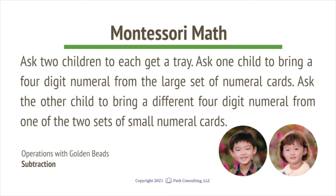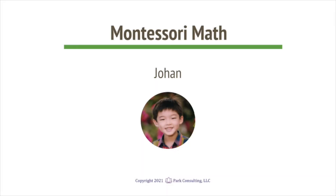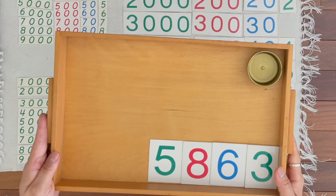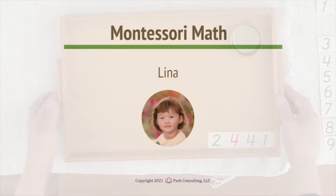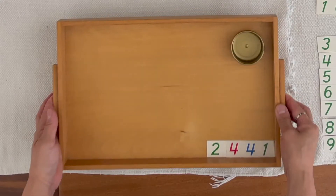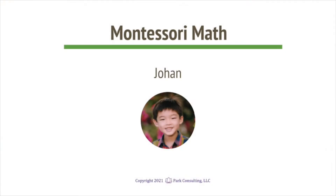This is called Operations with Golden Beads. Johan, you brought five thousand eight hundred six tens three units. Now can you get the quantities that match those numerals? Lina, you brought two thousand four hundred four tens one unit.